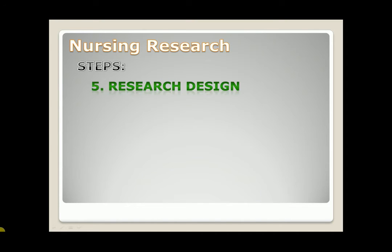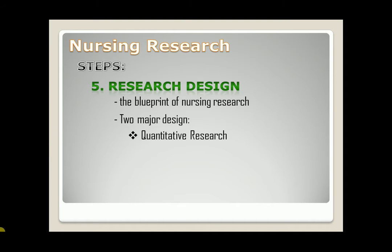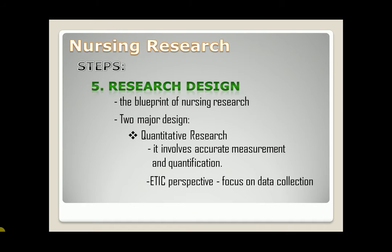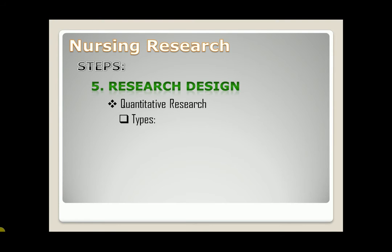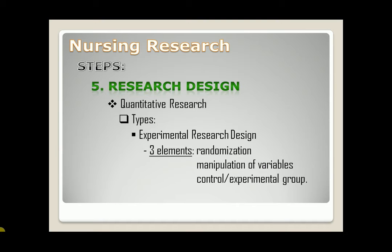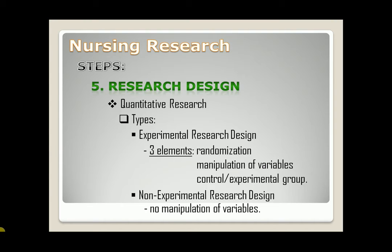Fifth step is research design. This is the blueprint of nursing research. Two major designs: first, quantitative research — it involves accurate measurement and quantification. It has an etic perspective, which focuses on data collection, then the respondents. Types of quantitative research: experimental research design, which has three elements — randomization, manipulation of variables, and control or experimental group. Second type is non-experimental research design, where there is no manipulation of variables.